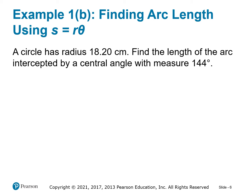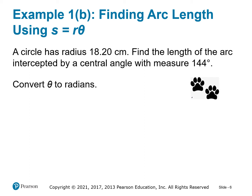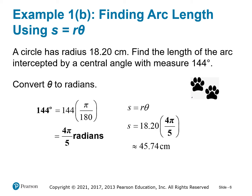Let's try another one where the angle is in degrees, so some upfront work is needed. First, convert the angle from degrees to radians by multiplying by π/180, giving 4π/5 radians. Then use arc length equals radius times angle: 18.2 times 4π/5 gives an arc length of approximately 45.74 centimeters.